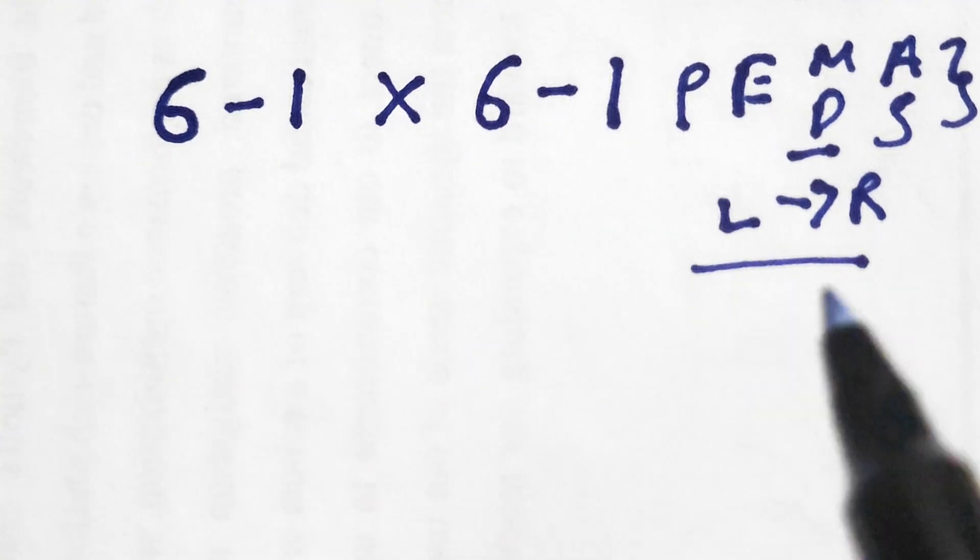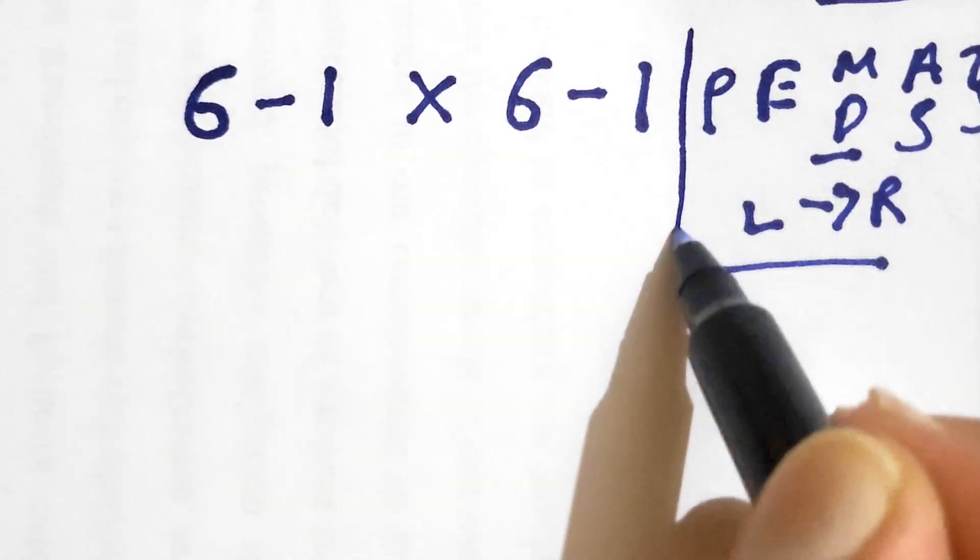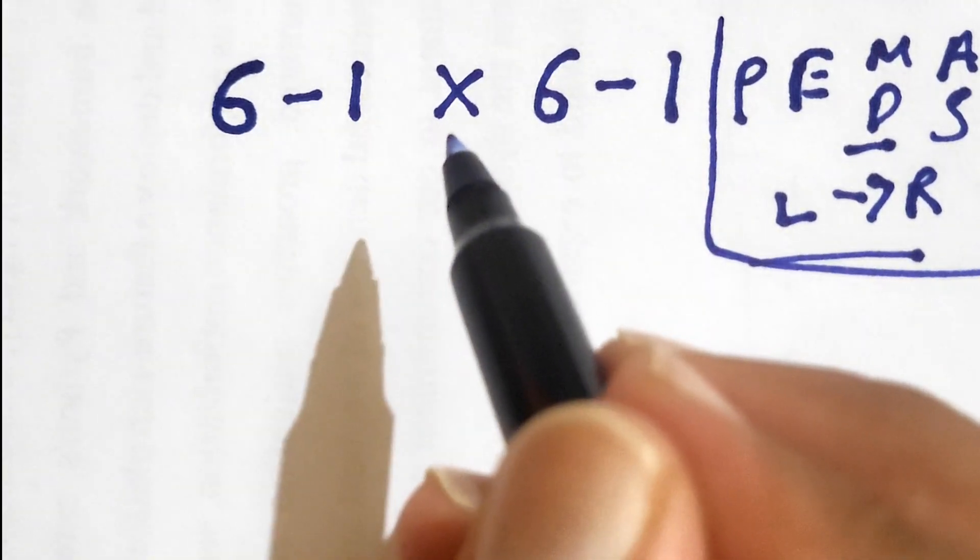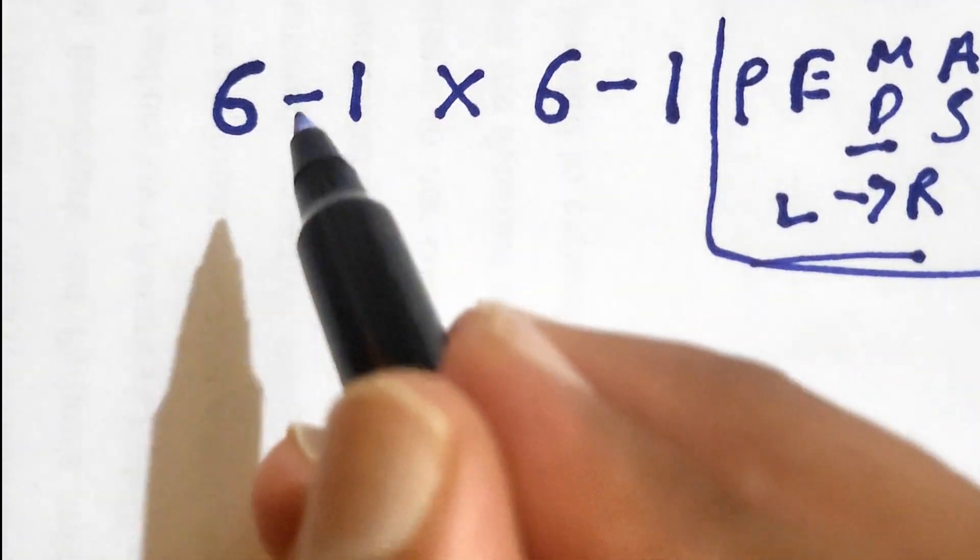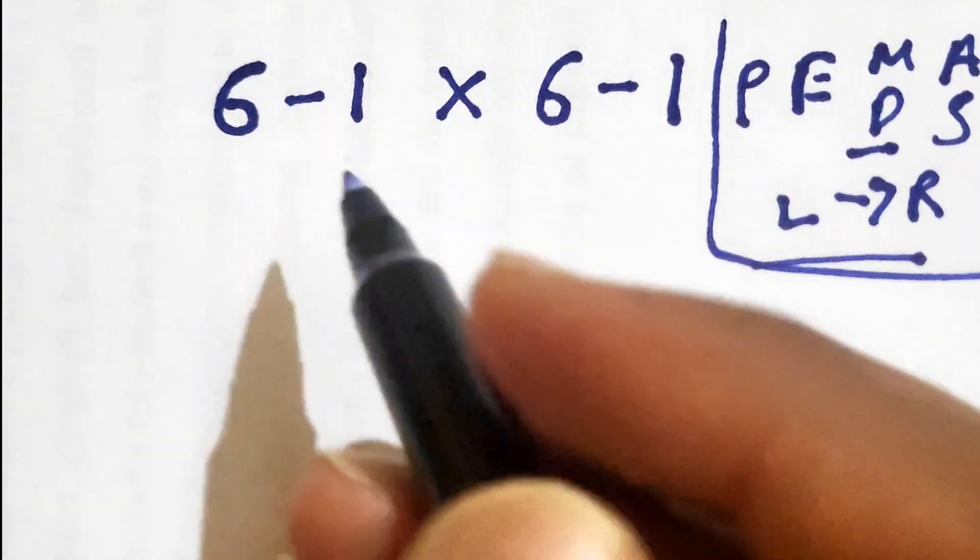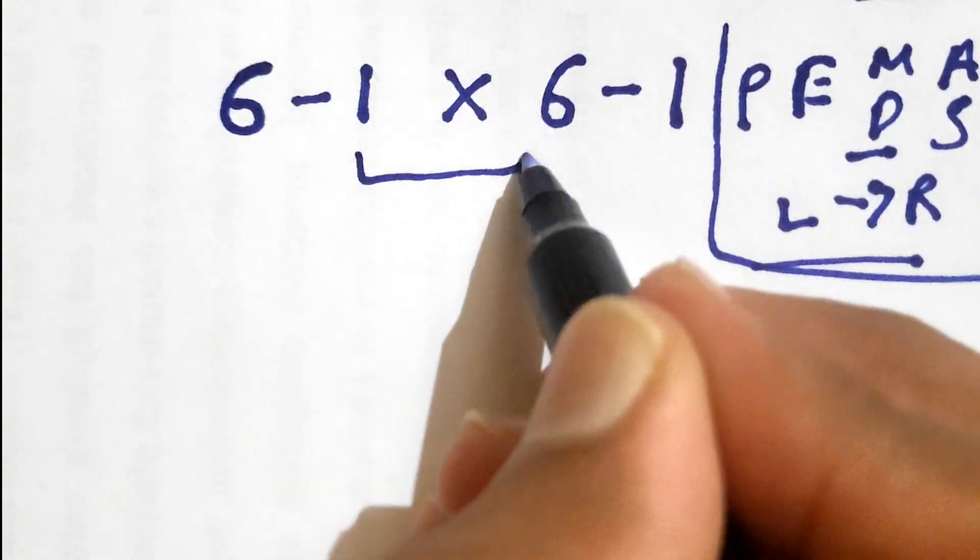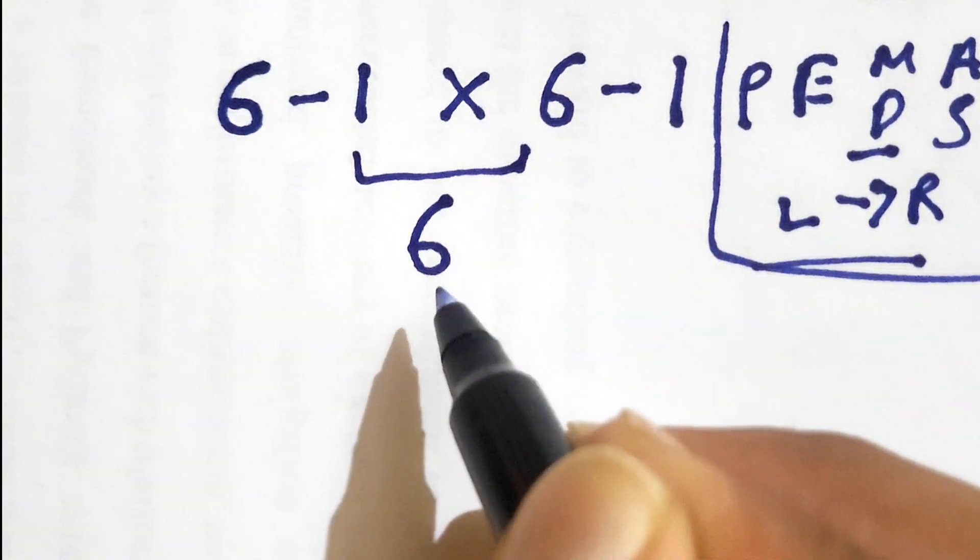Let's try solving this with the help of order of operations. First we need to solve the multiplication because the priority of multiplication is greater than subtraction. So we need to solve this 1 times 6, that gives us 6, and now we need to rewrite the expression once again.